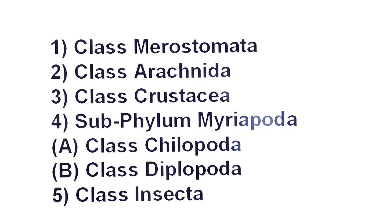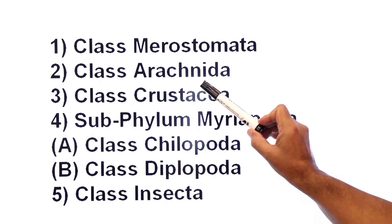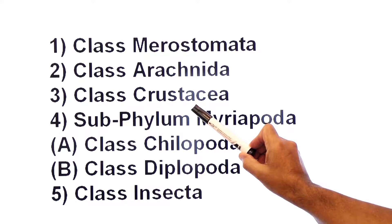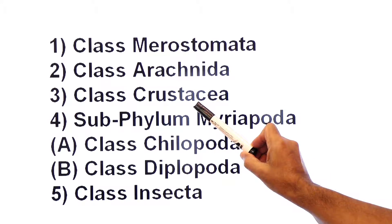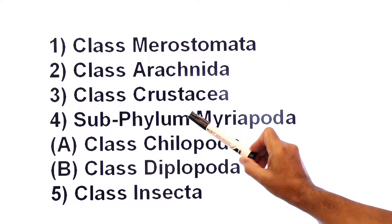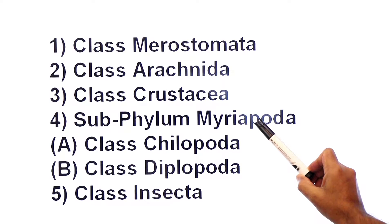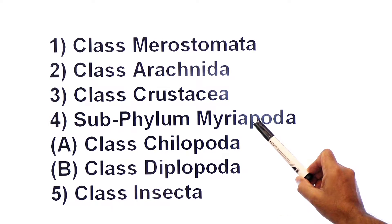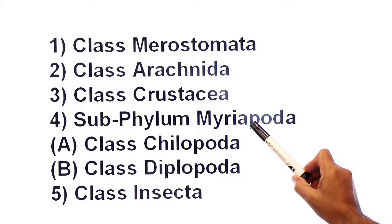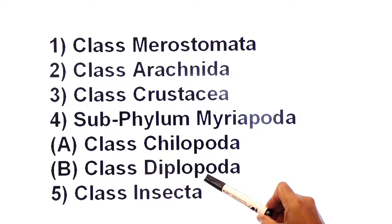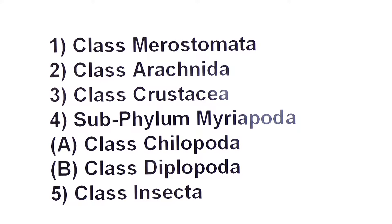First, class Merostomata. Number two, class Arachnida. Number three, class Crustacea. And subphylum Myriapoda, which is further divided into two classes: class Chilopoda and class Diplopoda. And number five, class Insecta.